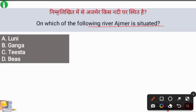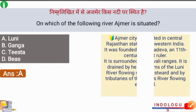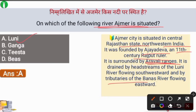Next question: On which river is Ajmer situated? The right answer is option A, the Looni River. The Looni River flows in Rajasthan and Ajmer is located on its banks. Ajmer City is situated in central Rajasthan, northwestern India. It was founded by Ajay Dev in the 11th century. It is surrounded by the Aravalli Ranges and is drained by headstreams of the Looni River flowing southwest and by tributaries of the Banas River flowing eastward.